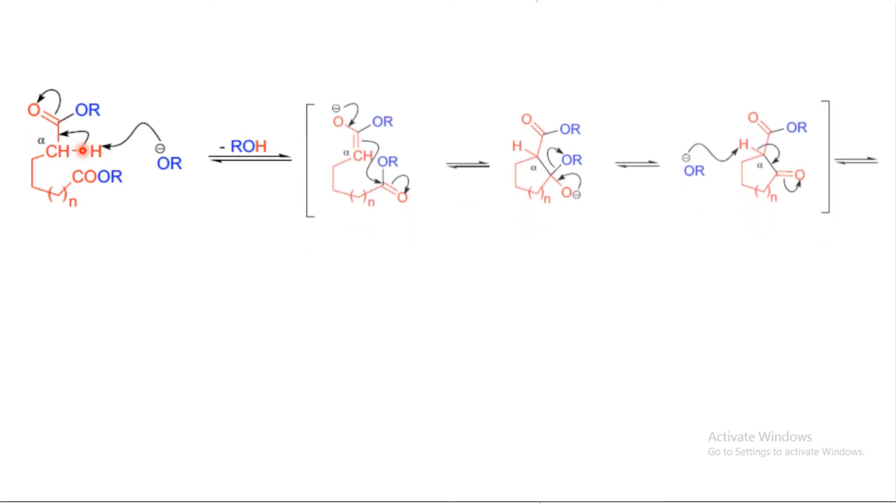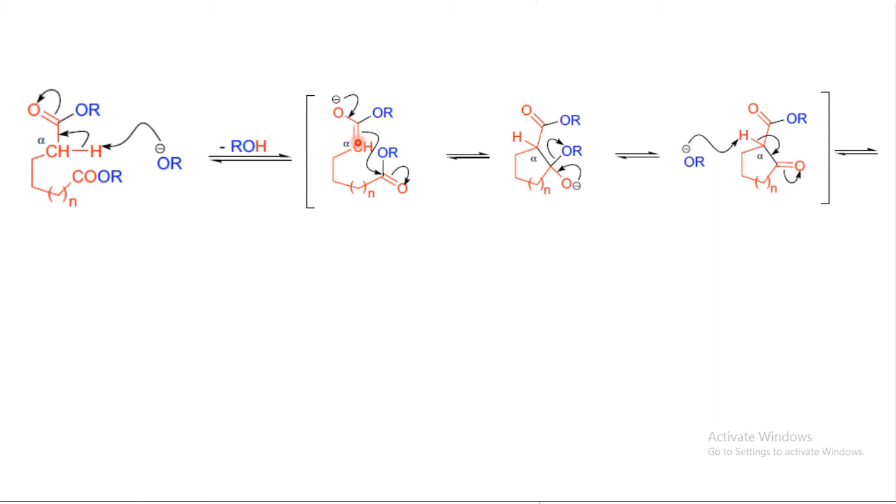In the next step, this enolate is formed at this position by extracting one of the protons from that carbon, and this enolate will attack on another ester to form a five-membered cyclic ring.